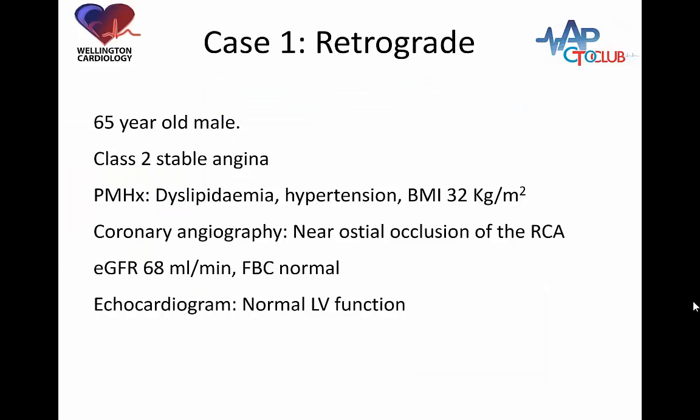I'm going to present a difficult retrograde case. This is a 65-year-old male with Class II angina, a number of risk factors: dyslipidemia, hypertension, overweight. Coronary angiography shows a near-osteal occlusion of the right coronary artery and not a lot of disease in the left. He's got good renal function, normal full blood count, and an echocardiogram shows normal LV function.